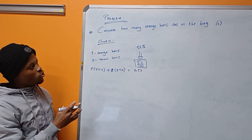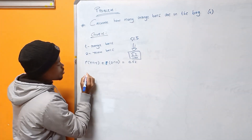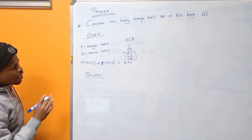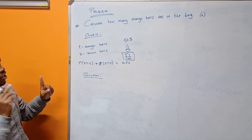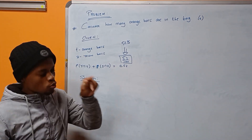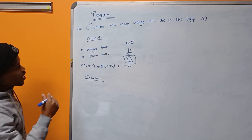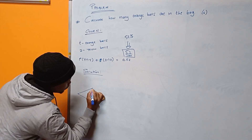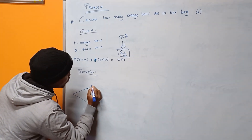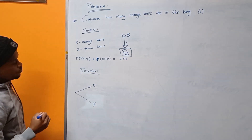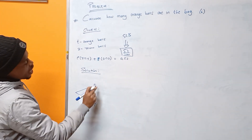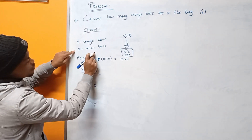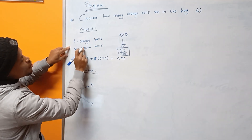We are now going to present the solution. The fact that we have two colors — orange and yellow — and we pick and replace each time, means we will be working with tree diagrams. The probability of picking an orange ball: since we have two colors, the sample space is the sum of the two. So if I want to pick an orange ball, it will be T over (orange plus yellow).